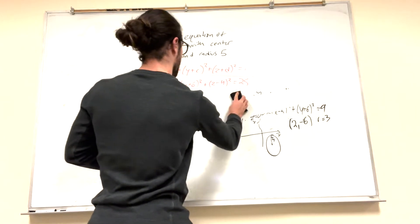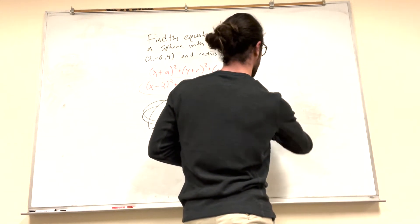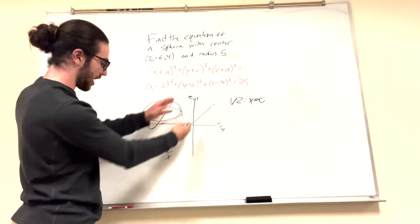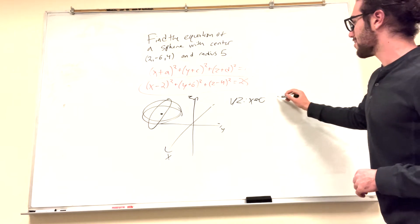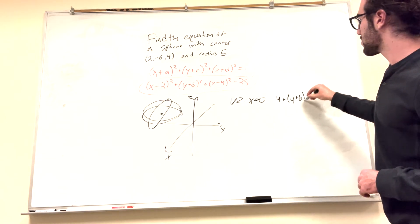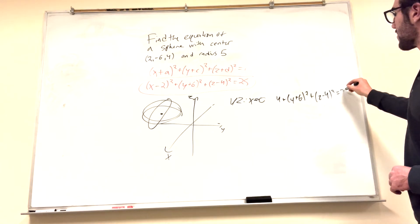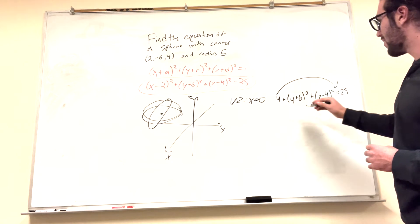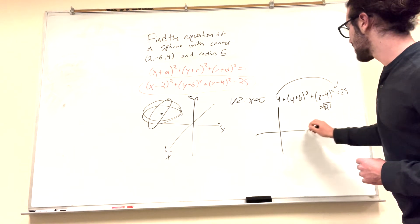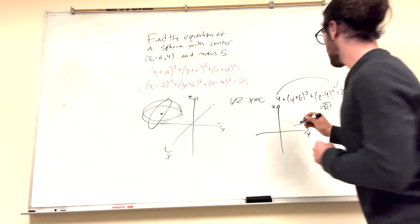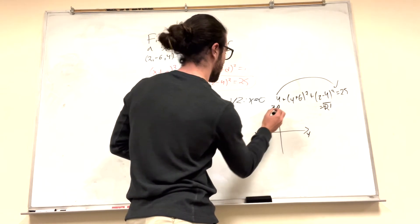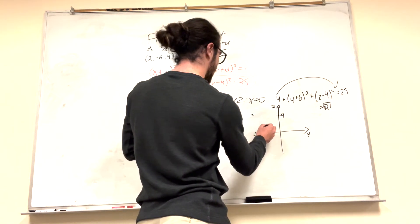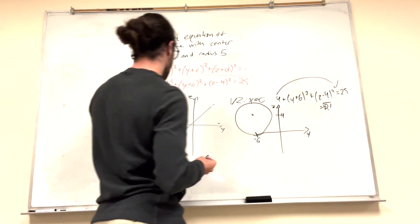Now we can also find what it looks like in the yz plane. If it's in the yz plane, x is always equal to 0. Plugging that in: 4 plus (y plus 6) squared plus (z minus 4) squared equals 25. Moving 4 over, we get equals 21. That means it's going to have a radius of square root of 21, which is about 4.5. The center is at y = negative 6, z = 4 in the yz plane.